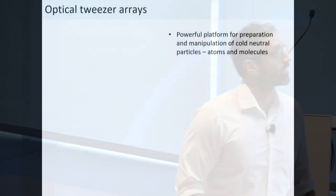Optical tweezer arrays are arrays of tightly focused laser light that we can use to trap and confine single neutral atoms and molecules. One of the wonders of this platform is that we can dynamically reconfigure these optical tweezers in real time to form defect-free arbitrary patterns of interest. For example, here's a laser UChicago sign made by rearranging our cesium atoms.